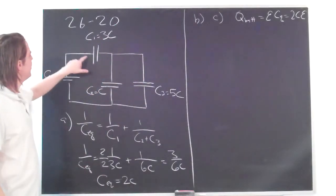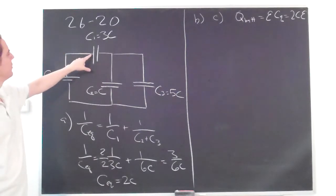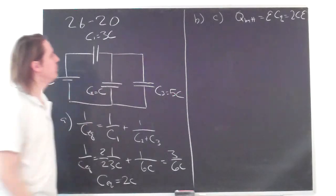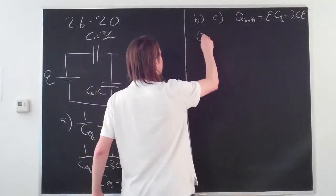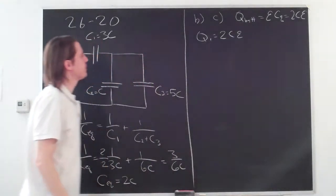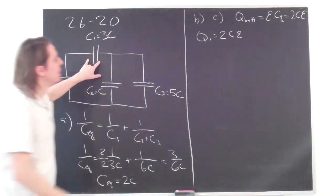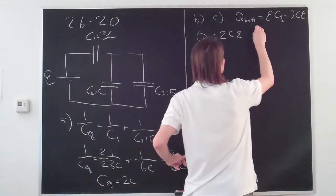That's how much charge is going to come out of the battery. That means that's the charge that's going to have to build up on C1, because this one is by itself. So this charge comes out here, you get plus 2CE there, minus 2CE there. So we've already answered one question. Q1 equals 2CE. If we know that, we can also get the voltage drop across C1. Delta V1.